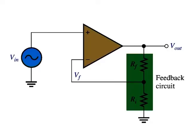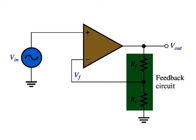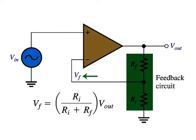Non-inverting amplifier. The figure here shows an op-amp connected in a closed loop configuration as a non-inverting amplifier with a controlled amount of voltage gain. The input signal is applied to the non-inverting input. The output is applied back to the inverting input through the feedback circuit formed by the input resistor RI and the feedback resistor RF. This creates negative feedback as follows: resistors RI and RF form a voltage divider circuit which reduces Vout and connects the reduced voltage Vf to the inverting input.